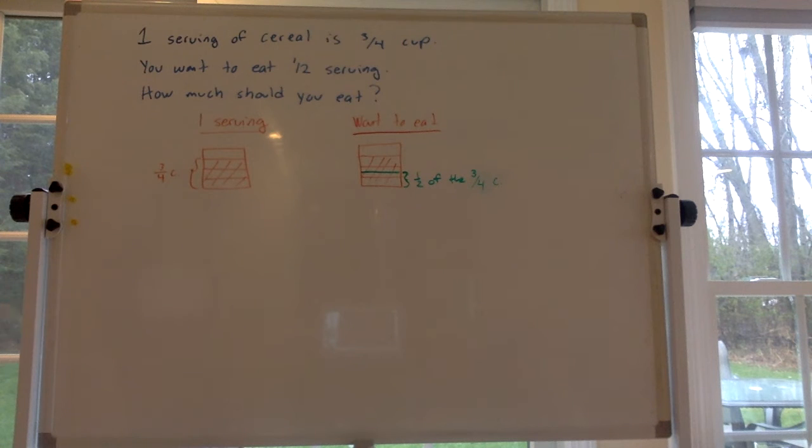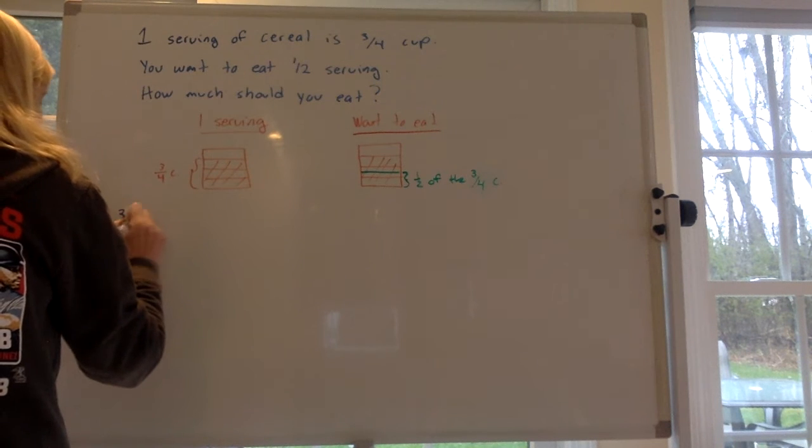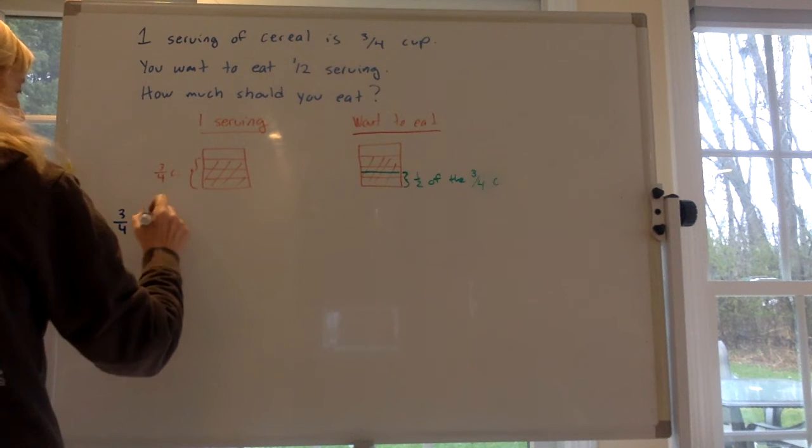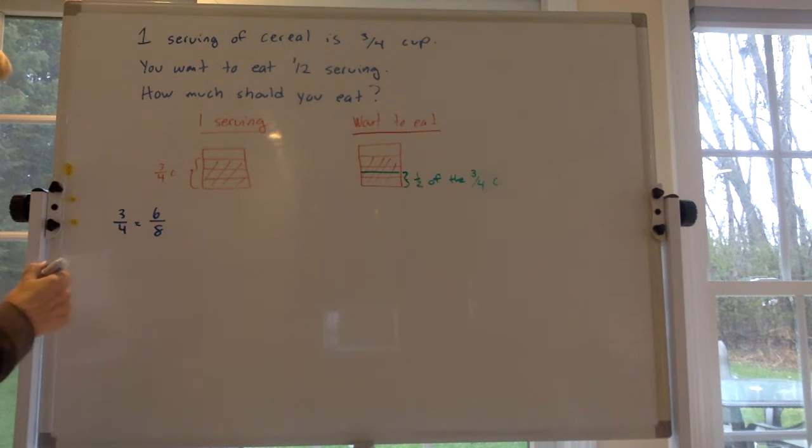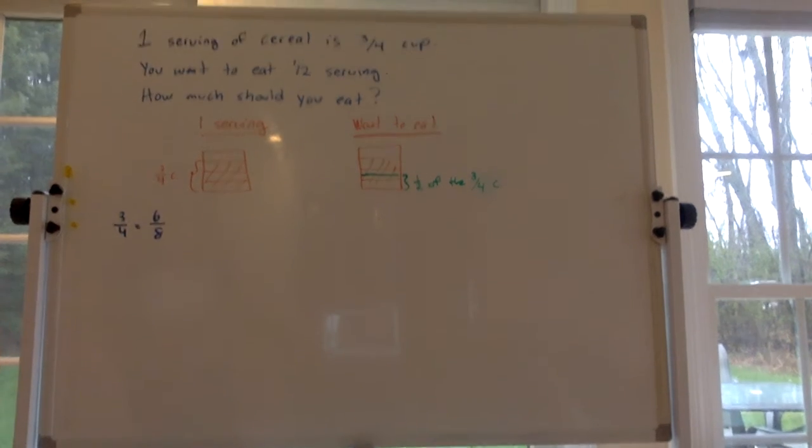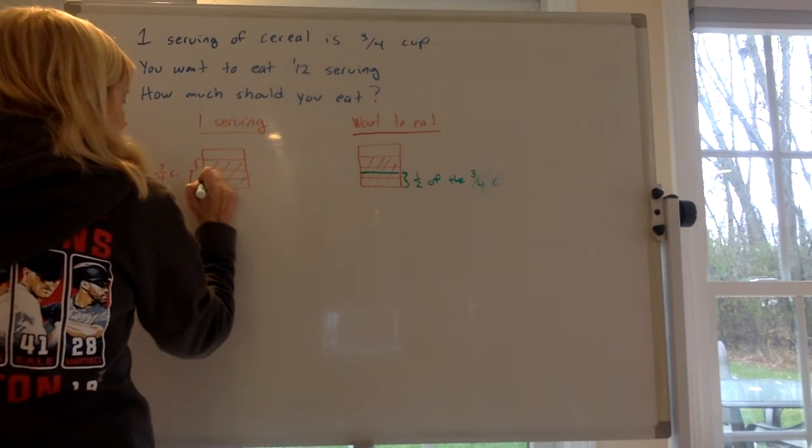So if we want to convert three-fourths to eighths, how do we convert three-fourths to eighths? You multiply the 4 by 2 to get to 8, so you multiply the 3 by 2 to get to 6. So what we really want to do is divide this thing up into eighths instead of fourths. How would we do that?